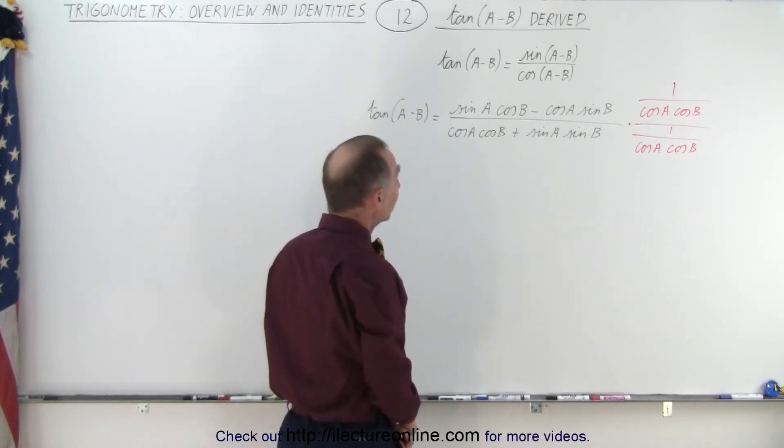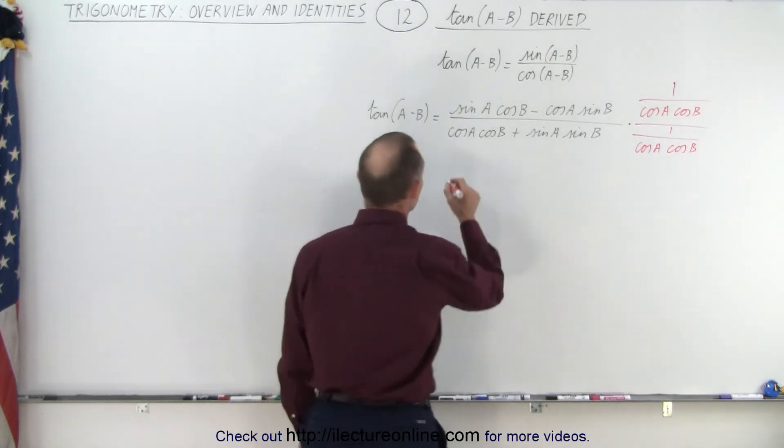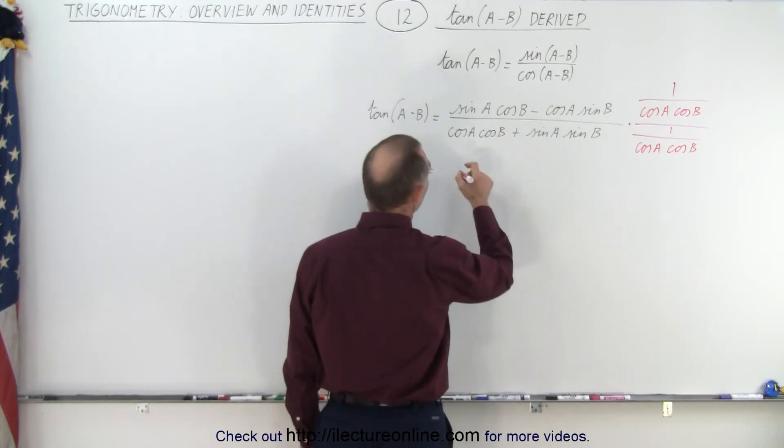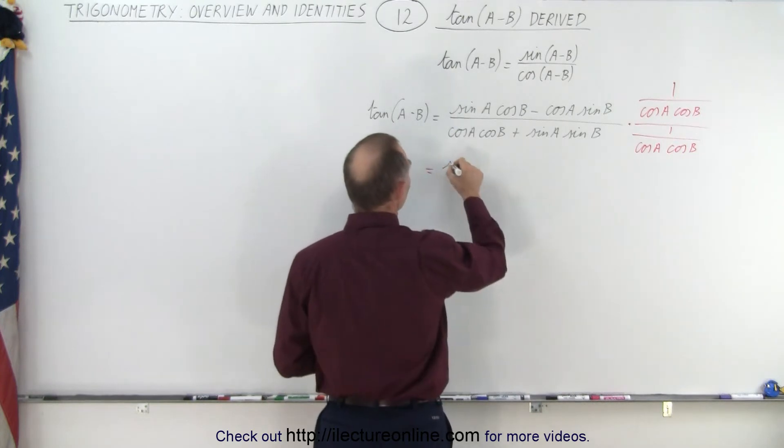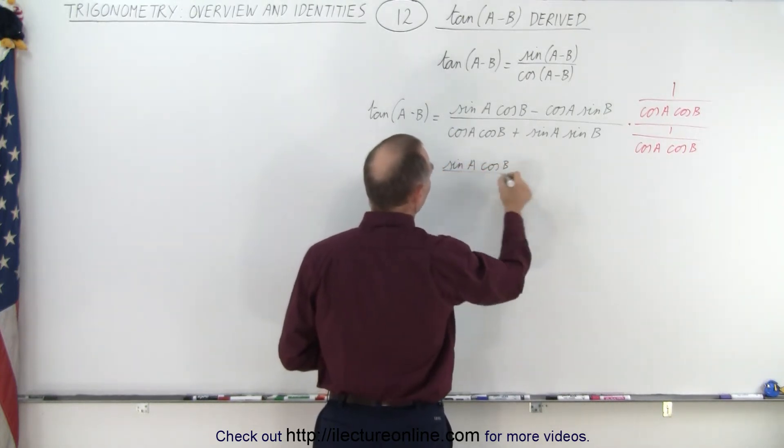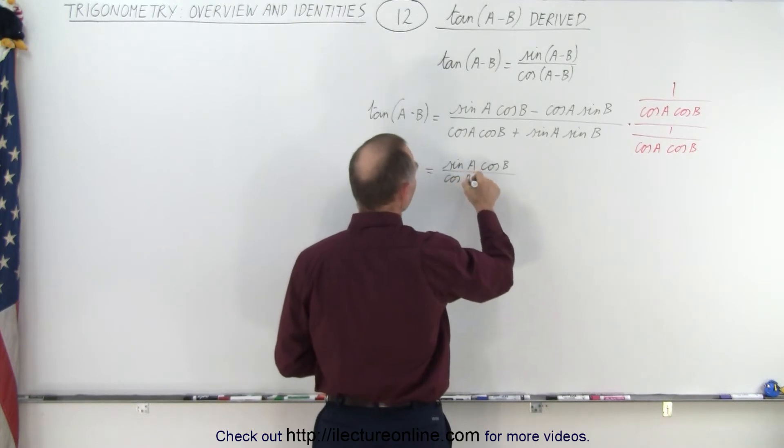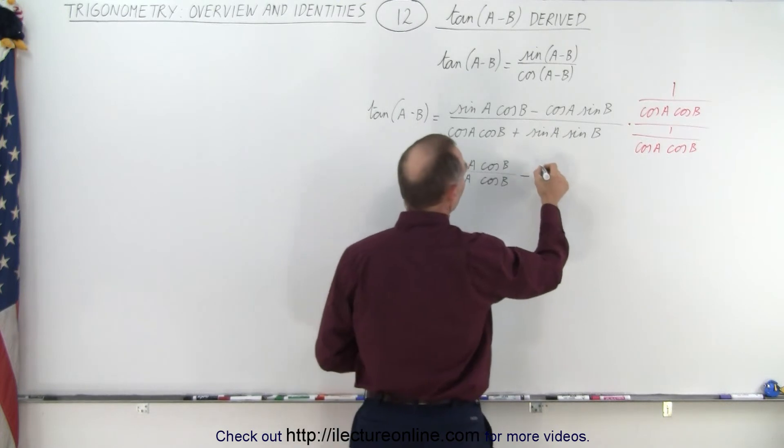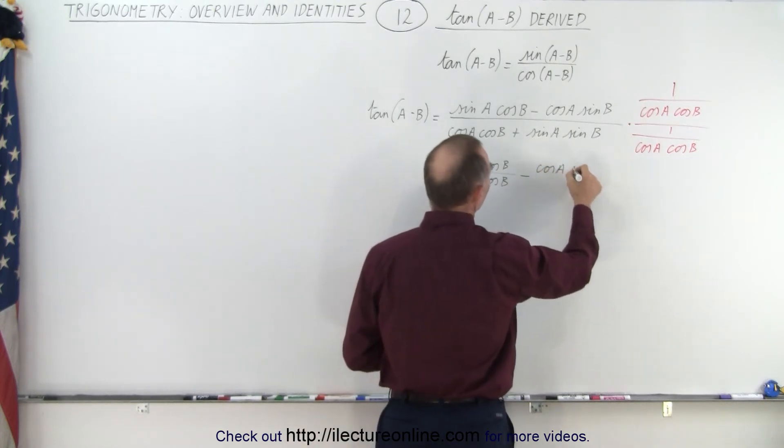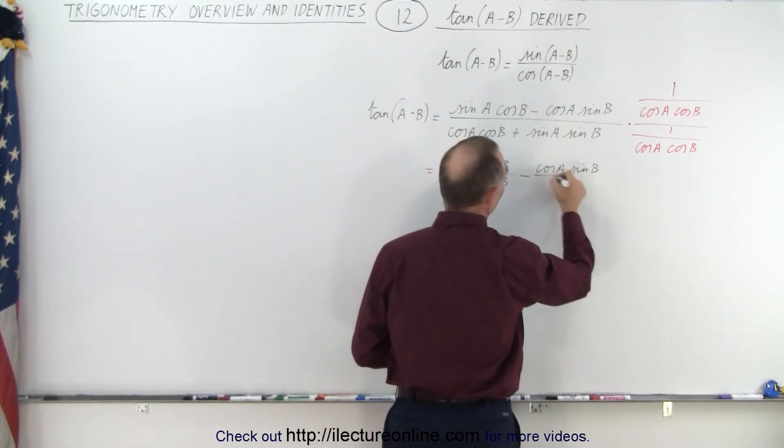And then what we end up with, well, let's see what we get. So this is equal to the sine of A cosine of B divided by cosine A cosine B minus cosine A sine B divided by cosine A cosine B, all divided by...